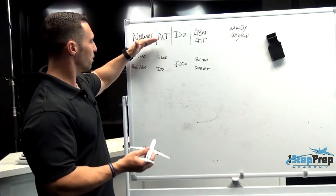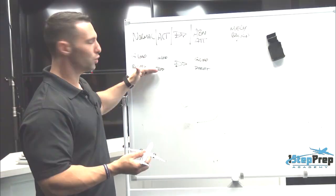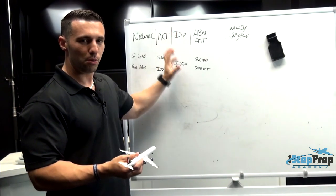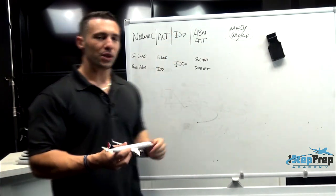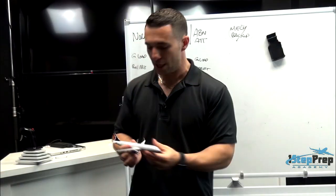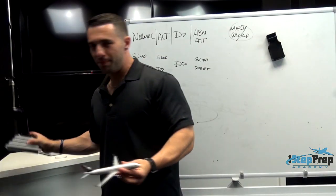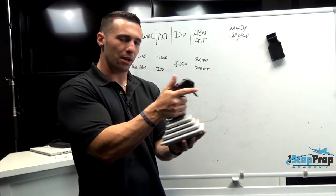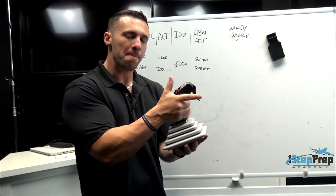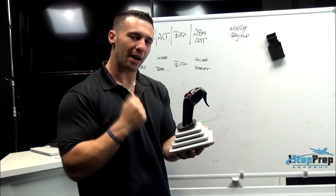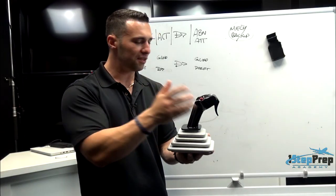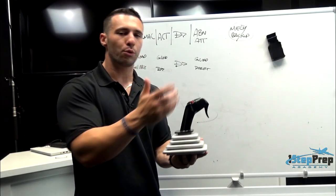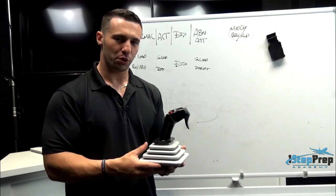Now let's go to direct law first because it's a bit more clear-cut. In direct law, your side stick relationship is direct — if you deflect 50% aft on the side stick, you'd expect to get 50% aft elevator input, and the same is true for nose-down. In the ailerons it's the same: a 20%, 30%, or 40% side stick deflection yields a 40% deflection on the flight control surface.